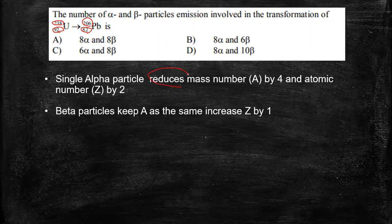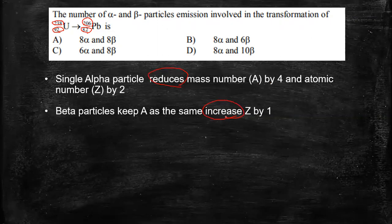Now the second point is that beta particles keep the mass number A the same. It will not make any change in the mass number, but it will increase the atomic number by 1. So here when there is alpha particle emission, there is a reduction in both mass number and atomic number, but beta particles there is an increase in the atomic number. So these two things you have to keep in mind.